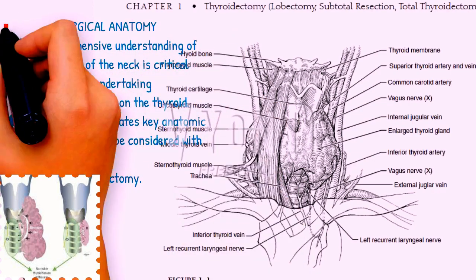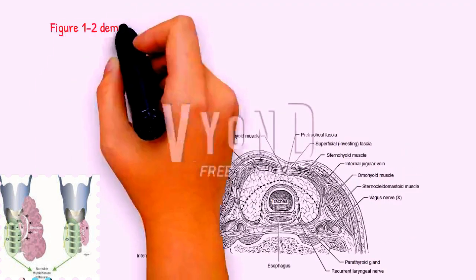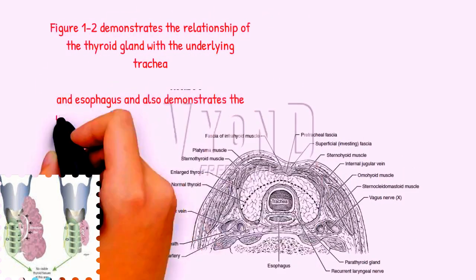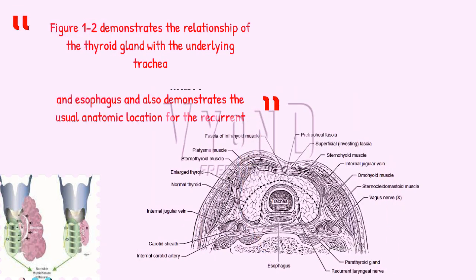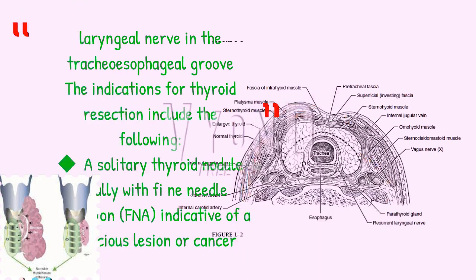Surgical Anatomy. A comprehensive understanding of the anatomy of the neck is critical before undertaking surgical procedures on the thyroid. Figure 1-1 demonstrates key anatomic structures that must be considered with thyroidectomy. Figure 1-2 demonstrates the relationship of the thyroid gland with the underlying trachea and esophagus, and also demonstrates the usual anatomic location for the recurrent laryngeal nerve in the tracheoesophageal groove.